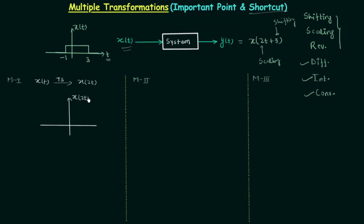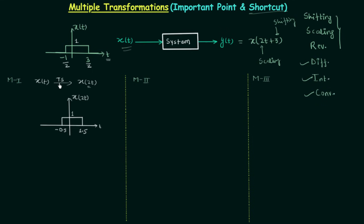The signal x(2t) has x-axis as t, so we are simply multiplying 2 to t. The amplitude remains the same since we are only transforming in time. The time axis values are divided by 2: minus 1 becomes minus 0.5 and 3 becomes 1.5. So we have divided minus 1 by 2 and 3 by 2 to get minus 0.5 and 1.5. Comparing the two signals, the signal is clearly compressed after time scaling.